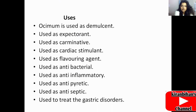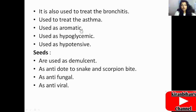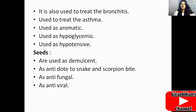Ocimum basilicum is also used to treat bronchitis — the blockage of the bronchioles in the lungs. It is used in the treatment of asthma and as an aromatic. It has hypoglycemic and hypotensive effects — hypoglycemic means lowering blood glucose and hypotension means lower blood pressure. The seeds are used as a demulcent, as an antidote to snake and scorpion bite, and as antifungal and antiviral agents.